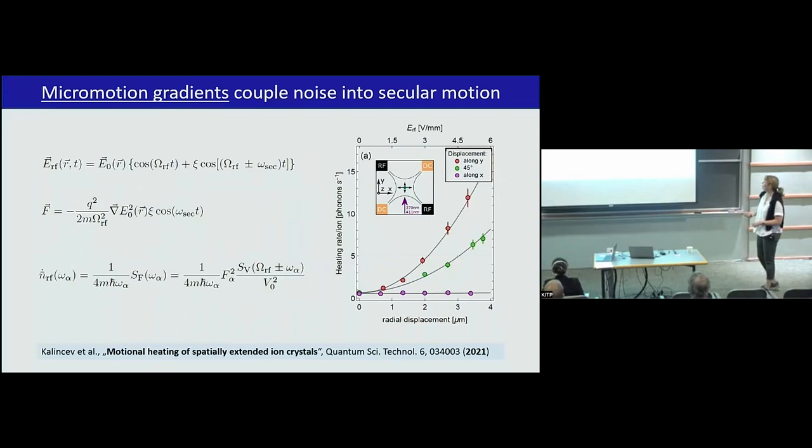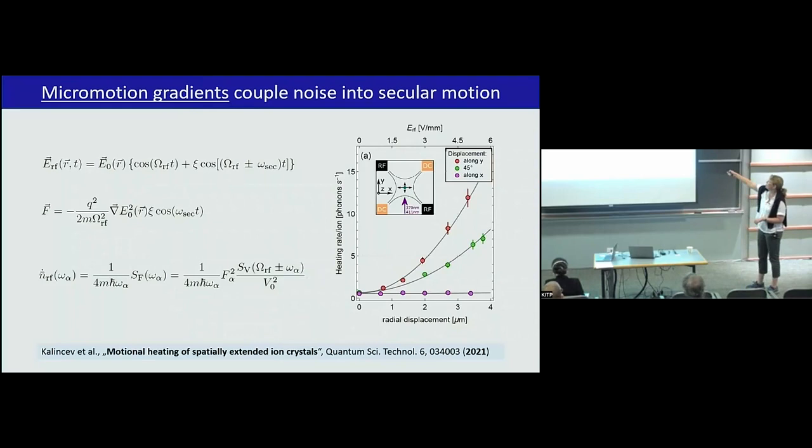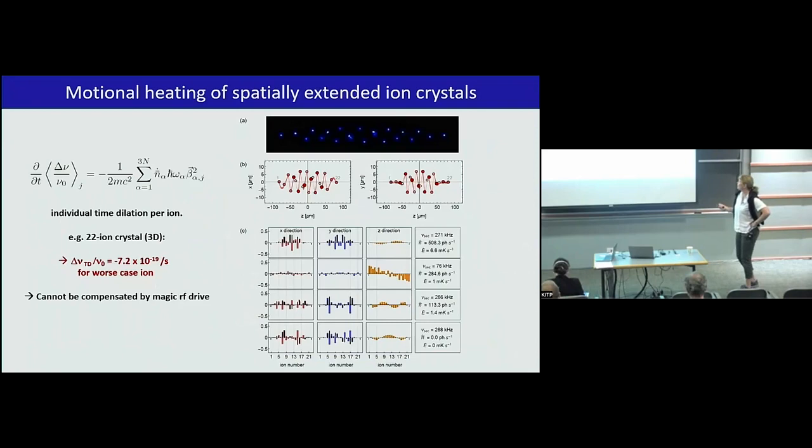But the other modes that break the symmetry, that are basically with nodes and stretched, they're really strongly suppressed because of symmetry arguments, because the noise is typically rather homogeneous. But that's not the full story. If you have gradients in micromotion, which you always do, because the ion trap is not infinite, you do see suddenly very strong heating, because the micromotion gradient couples now into the secular motion and heats the phonons.